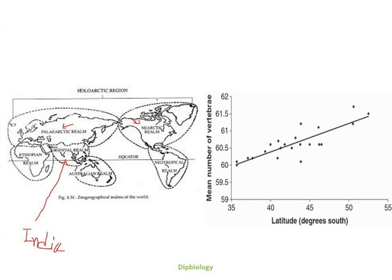We can say that temperature is inversely related to the meristic characters of some fishes — meristic characters like fin rays, scales, vertebrae, and many other characters. This is all about Jordan's Rule and why this rule is called an ecogeographical rule.